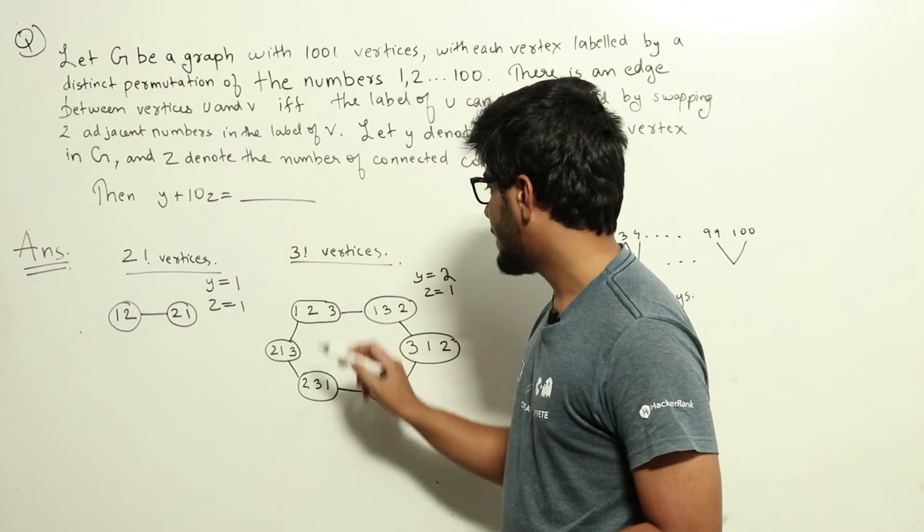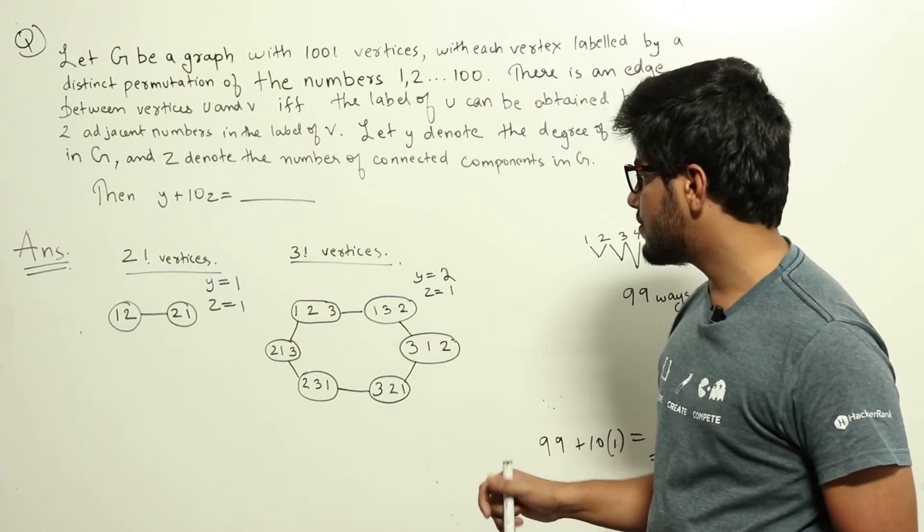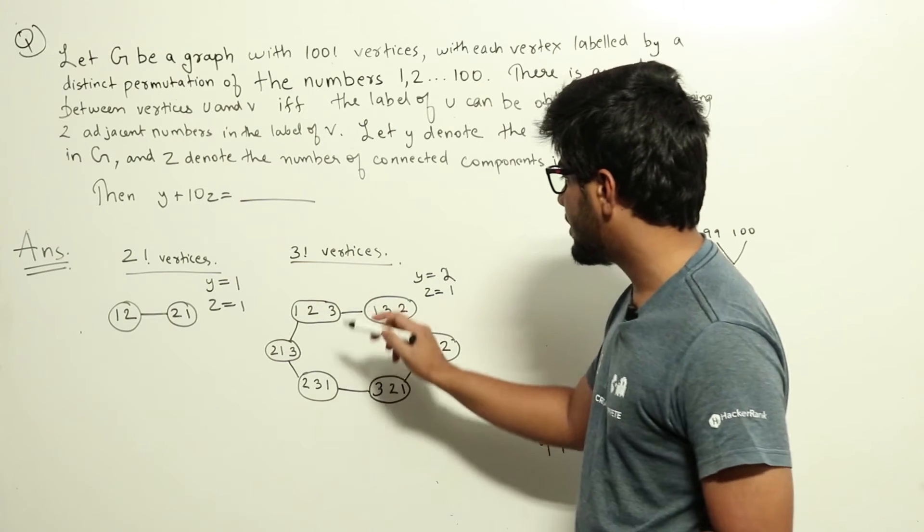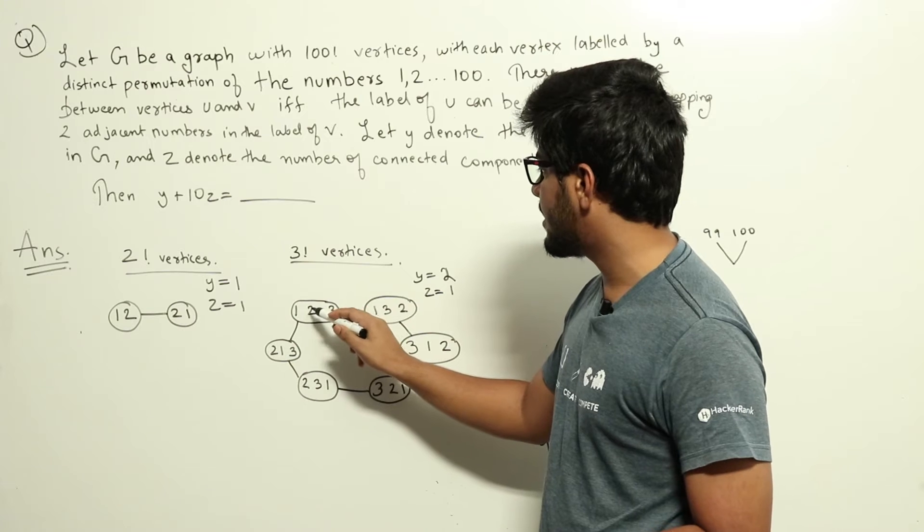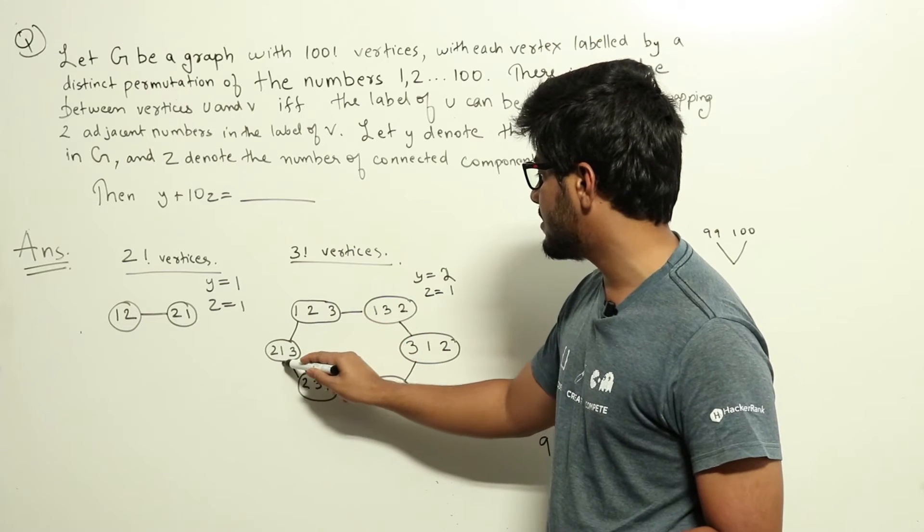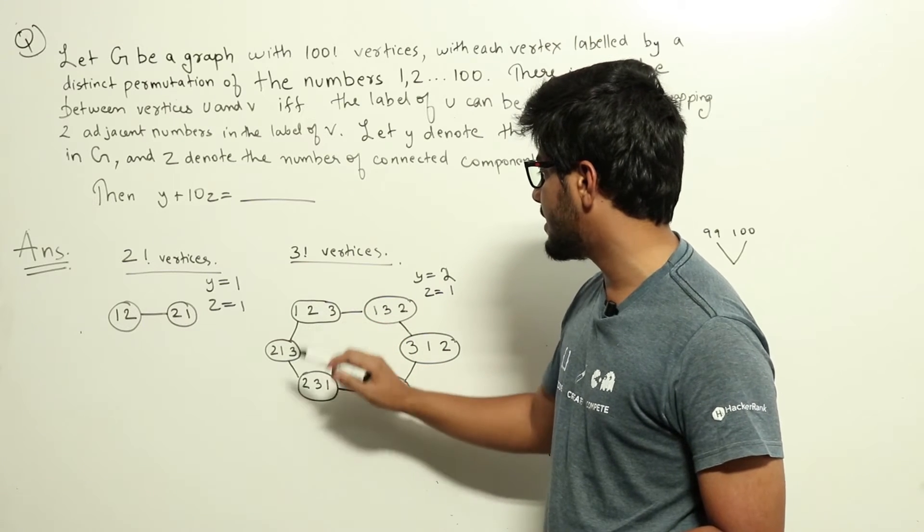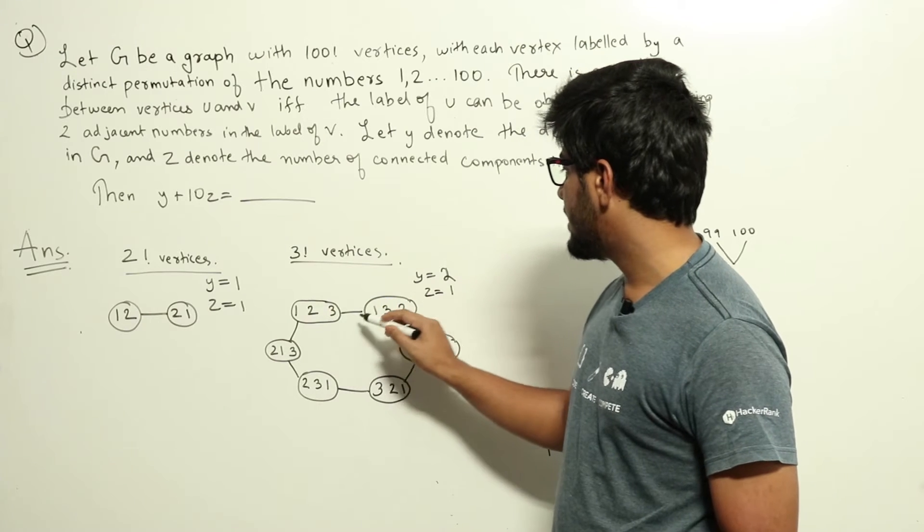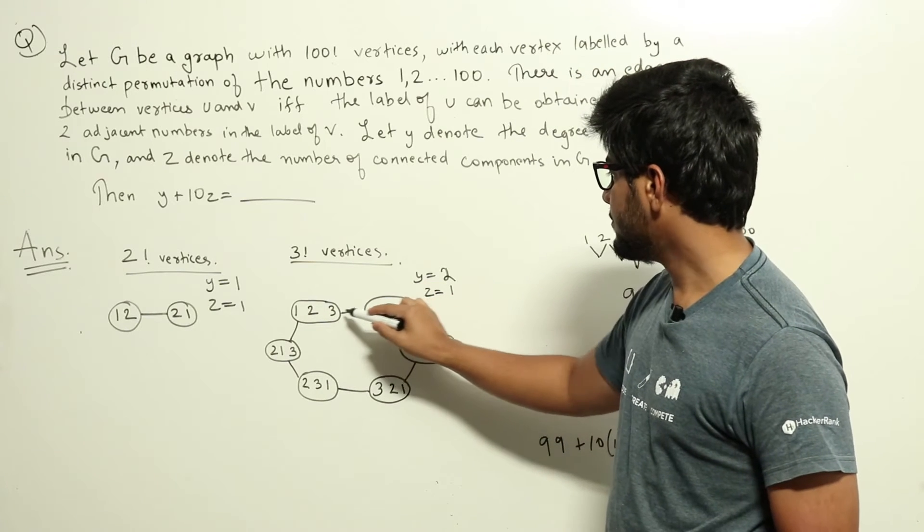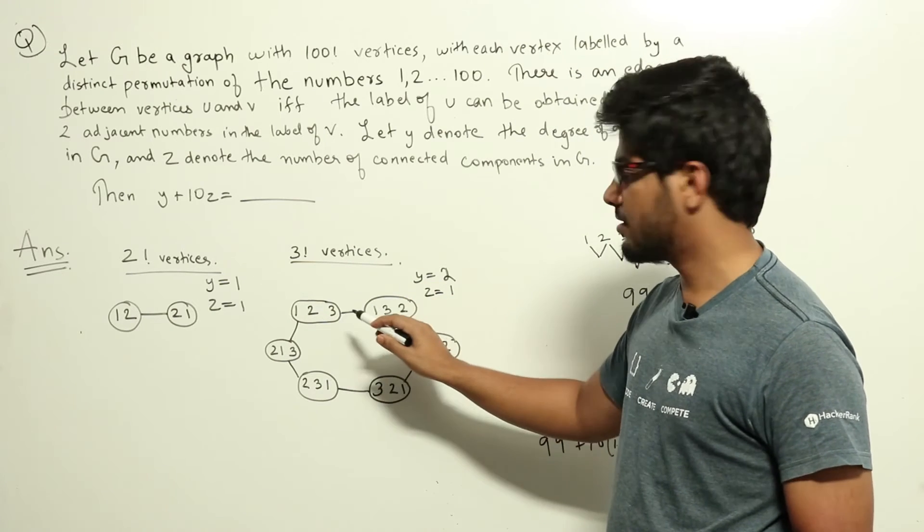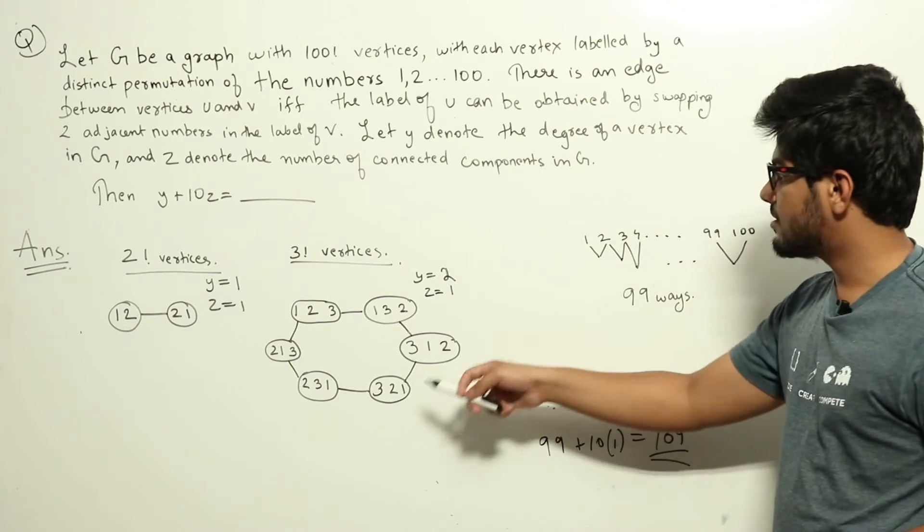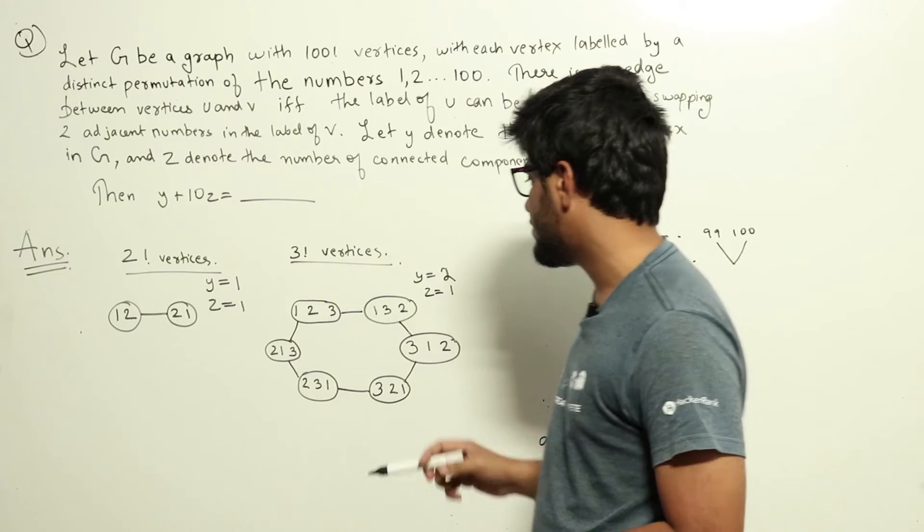Let's take the node 1, 2, 3. There are two ways we can swap adjacent elements and form a different label. So we can swap 1 and 2. In that case we will get 2, 1, 3. That is this node. So we will form an edge here. Also one more way is we can swap 2 and 3 to get 1, 3, 2. That is this node. So that is denoted by this edge. So from this node there will be two edges.